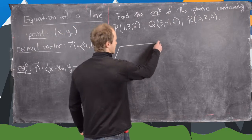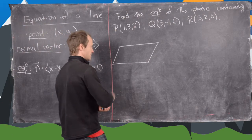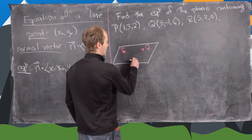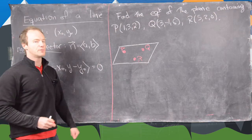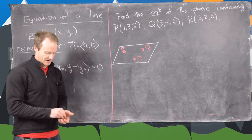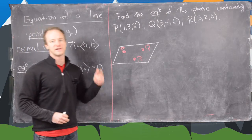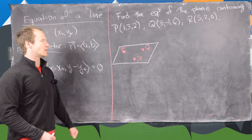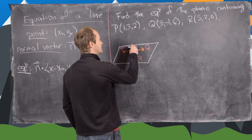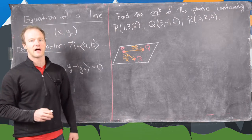Let's sketch up what's going on. Let's draw our plane like this, with P, Q, and R marked on it. Notice that just like any two points define a line, any three non-collinear points define a plane. To find the equation of a plane we need a point and a normal vector, but we only have three points — we have no normal vector. So we've got more points than we need but we do not have a normal vector.